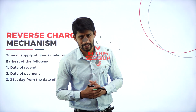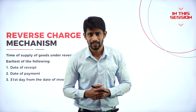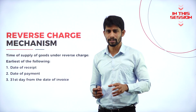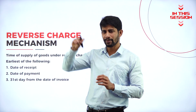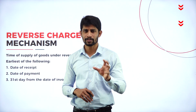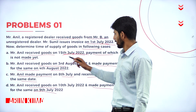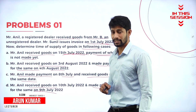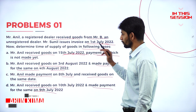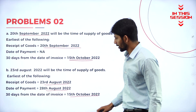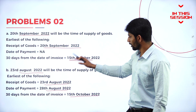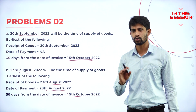In forward charge mechanism, the supplier is a registered dealer who collects the tax amount from the buyer and later remits the tax to the government. That is called forward charge mechanism. In case one, the date of payment is not given because payment has not yet been made, so date of payment is not available. The earliest date is 23rd August 2022, which will be the time of supply of goods.